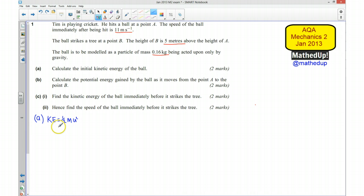So that's going to be equal to a half. And M, we are told, is going to be 0.16 kilograms. And U is going to be 11 metres per second. So that's going to be 11 squared. So my kinetic energy works out to be, if I put that into my calculator, 9.68 joules.